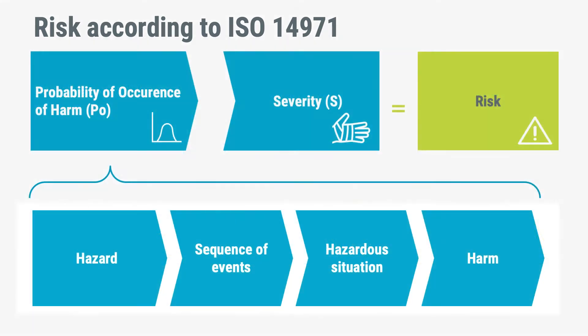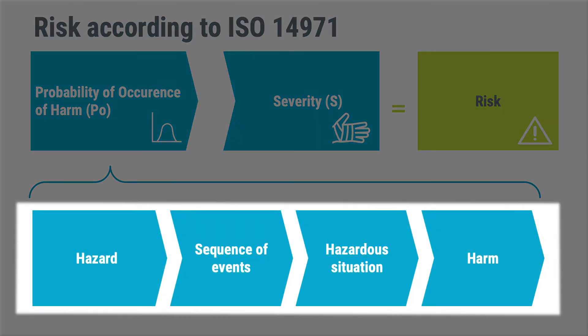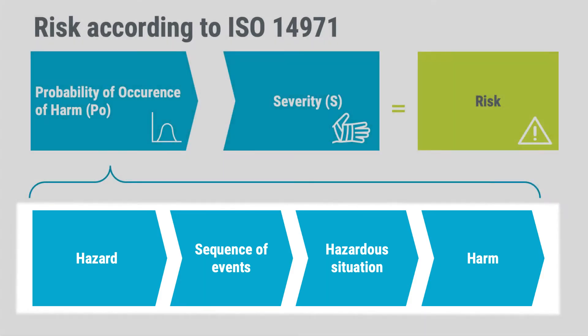The secret of software risk management is hidden in the probability of occurrence of harm. The probability of occurrence of harm is a combination of four factors: hazard, sequence of events, hazardous situation, and harm.